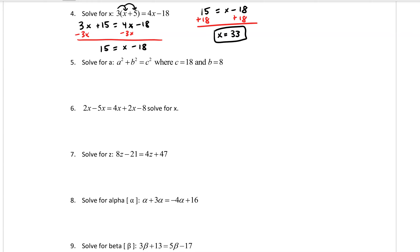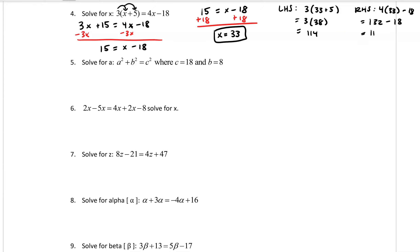To check the answer, plug 33 back into the original equation. On the left side: 3 times 33 plus 5 equals 3 times 38 equals 114. On the right side: 4 times 33 minus 18 equals 132 minus 18 equals 114. Both sides match, confirming that 33 is the correct answer.